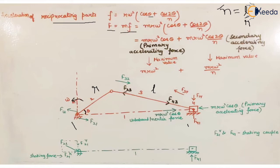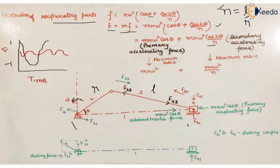Since force equals mass times acceleration, if the mass of the reciprocating parts is denoted by m, the force becomes mrω²(cosθ + cos2θ/n). Breaking this into two parts gives mrω²cosθ plus mrω²cos2θ/n. These are named the primary accelerating force and the secondary accelerating force. The maximum value of the primary force is mrω² and the maximum value of the secondary accelerating force is mrω²/n. If we plot a graph of force versus time, the primary accelerating force is maximum twice per revolution — at 0° and 180° — whereas the secondary accelerating force is maximum four times per revolution, at 0°, 90°, 180°, and 360°.